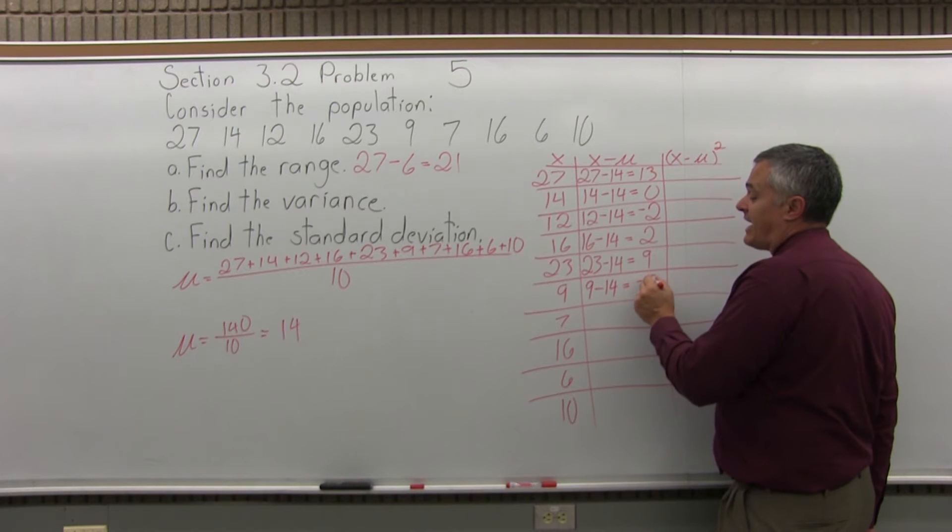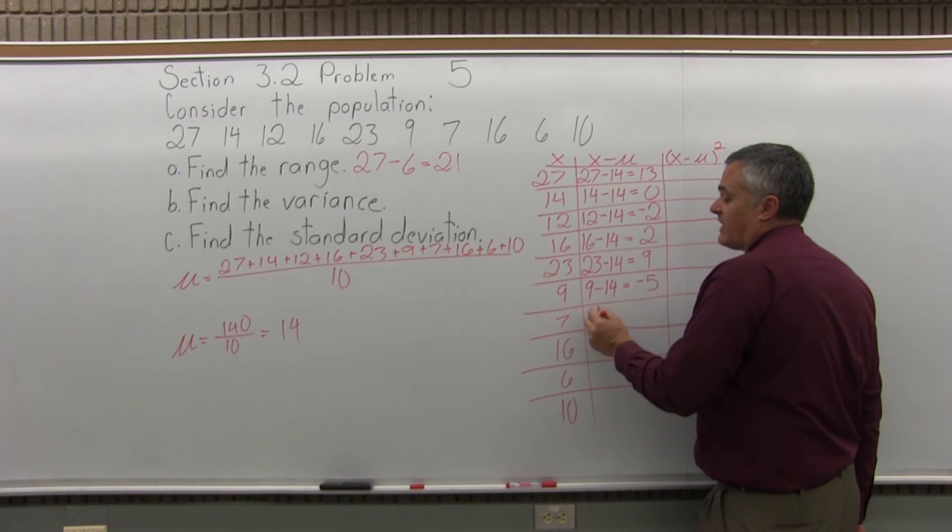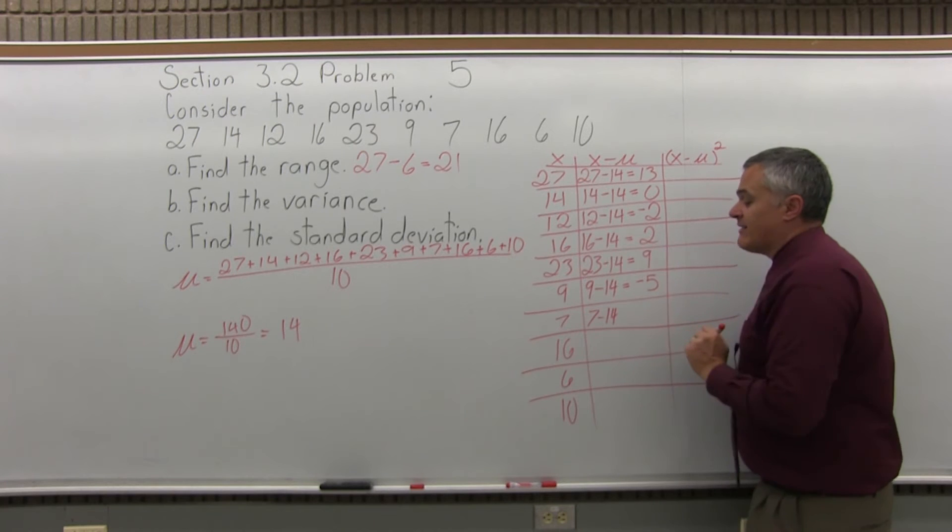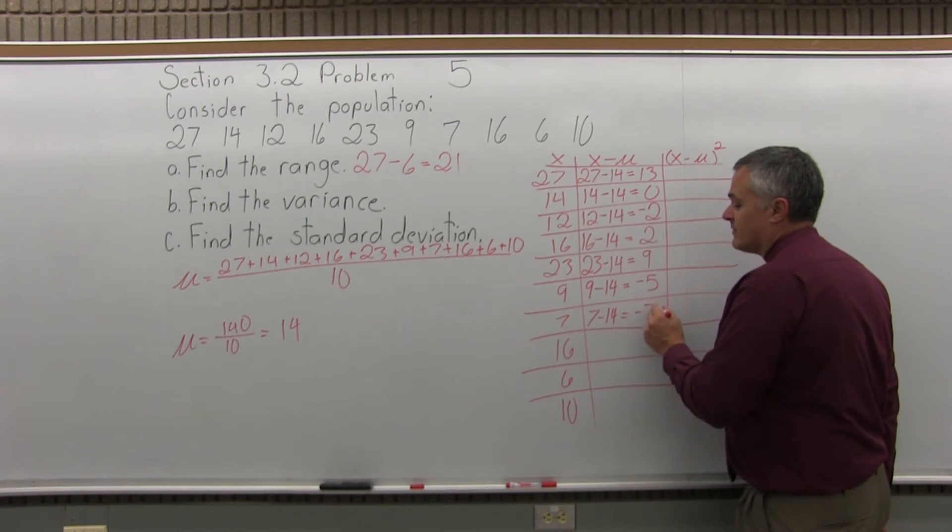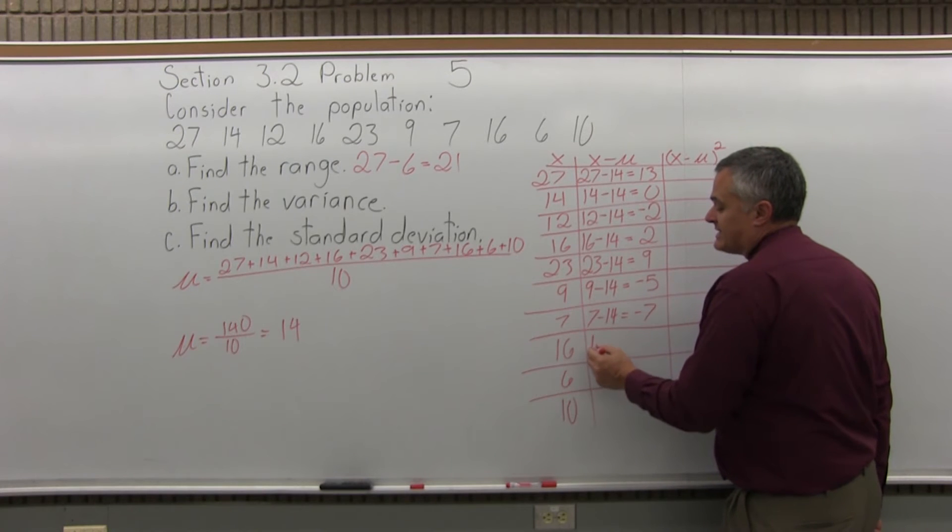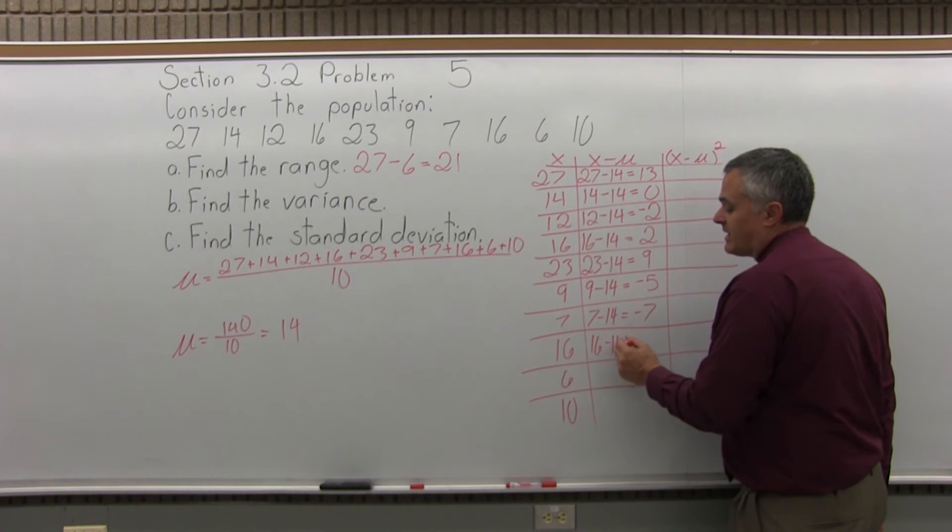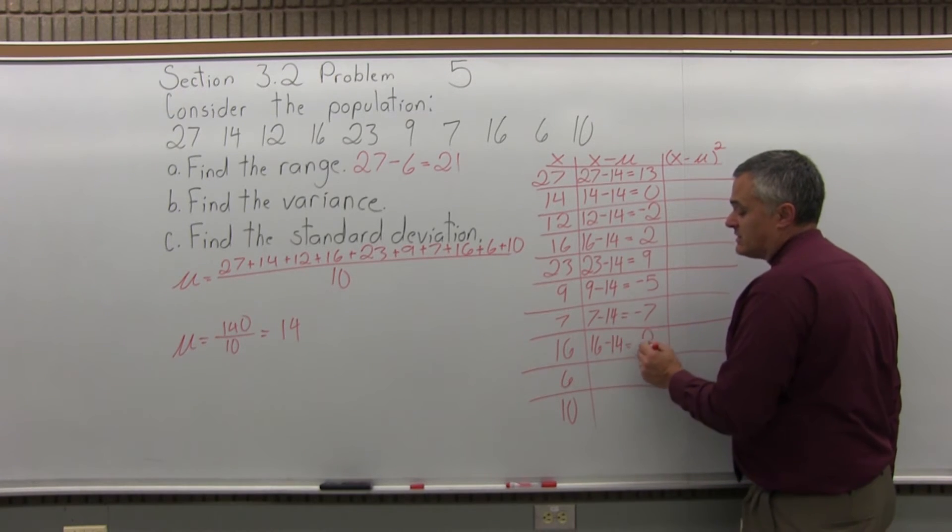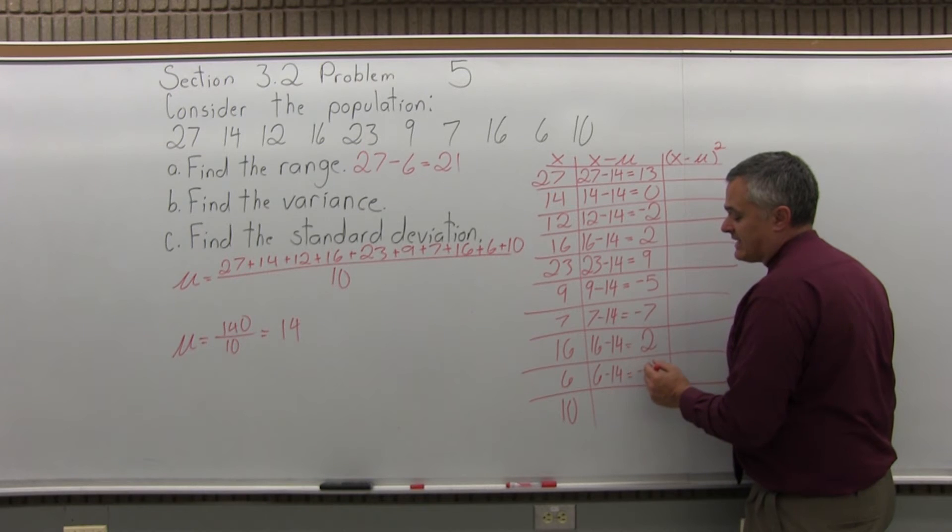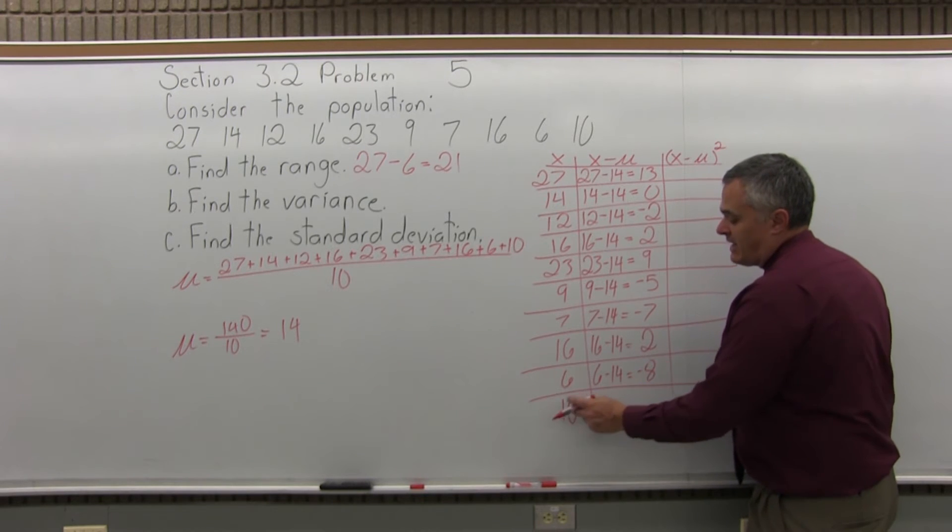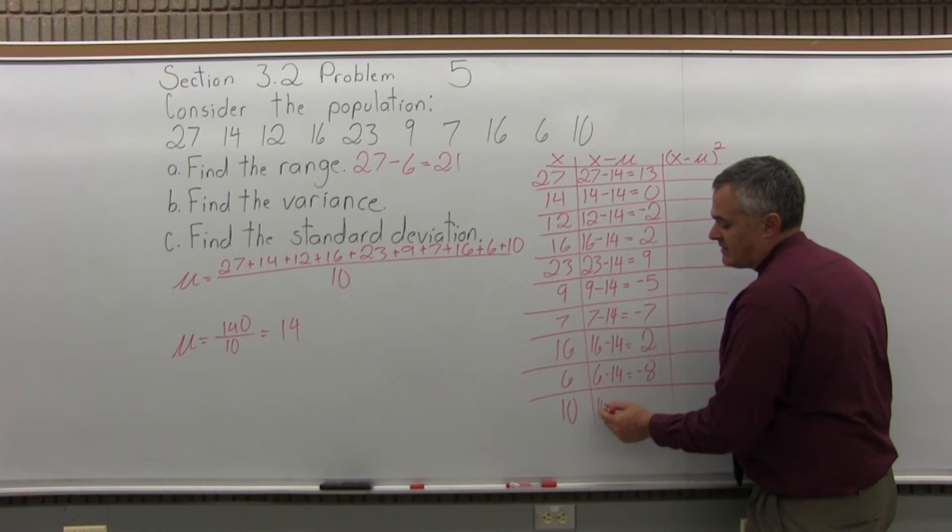The next value of x is 9, so 9 minus 14, which is negative 5. The next value is 7, so 7 minus 14 is negative 7. Next is 16, so 16 minus 14 is positive 2. The next value is 6, so 6 minus 14 is negative 8. And finally, the last value is 10, so 10 minus 14 is negative 4.